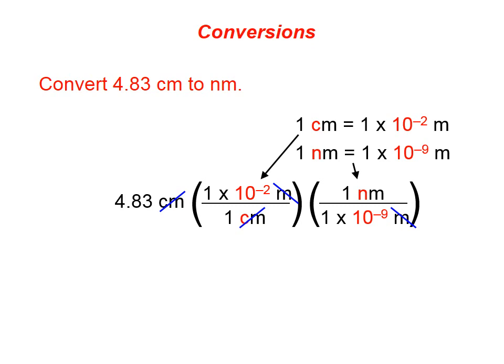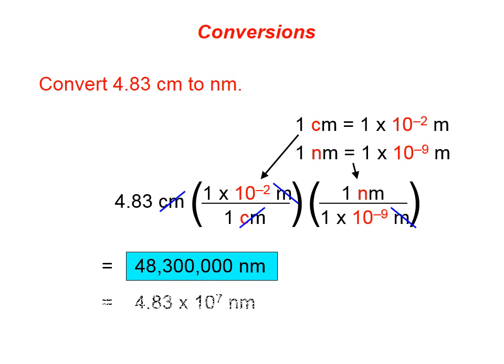When we type this in, everything has canceled except the unit nanometers. We type that properly into our calculator. We get a number like that. If you want to put it in scientific notation, that would be fine too. Remember whenever we do a conversion, however many significant figures we start with, in this case three, that's how many we need in our answer, which is what we have here.